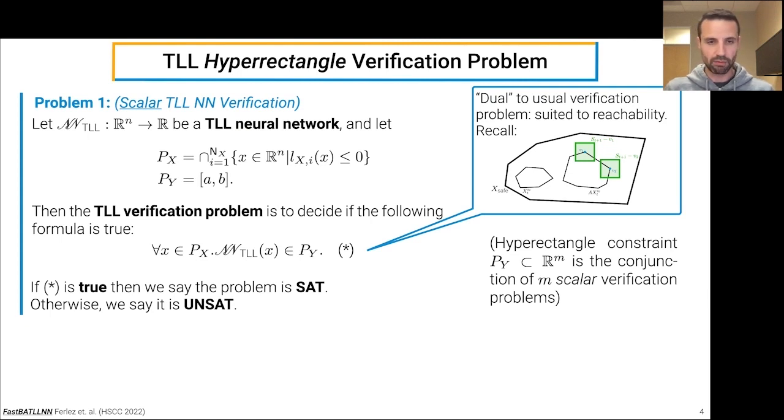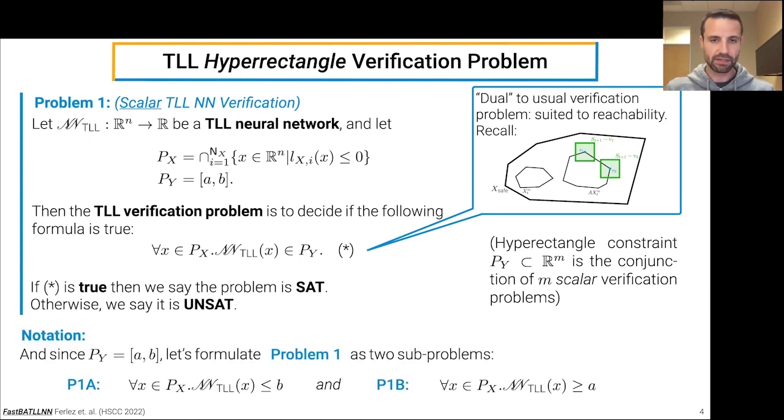If we go back to problem 1, we're going to further decompose it into two sub-problems. That is, an instance of problem 1 can be verified as a conjunction of an instance of problem 1A, which is verifying the output of the TLL is always less than or equal to b, and an instance of problem 1B, which is verifying that the output of the TLL is always greater than or equal to a.